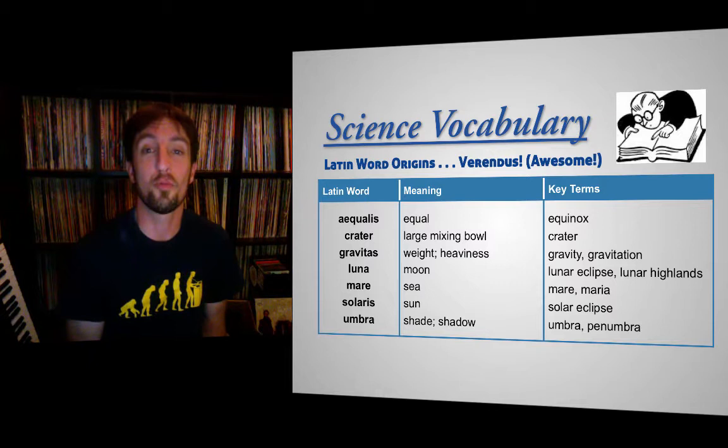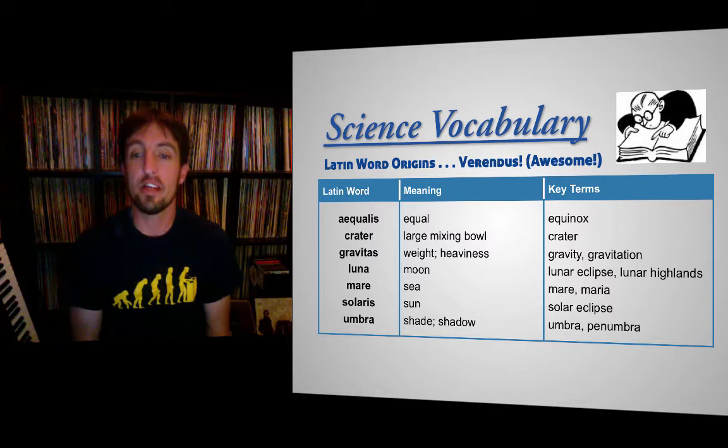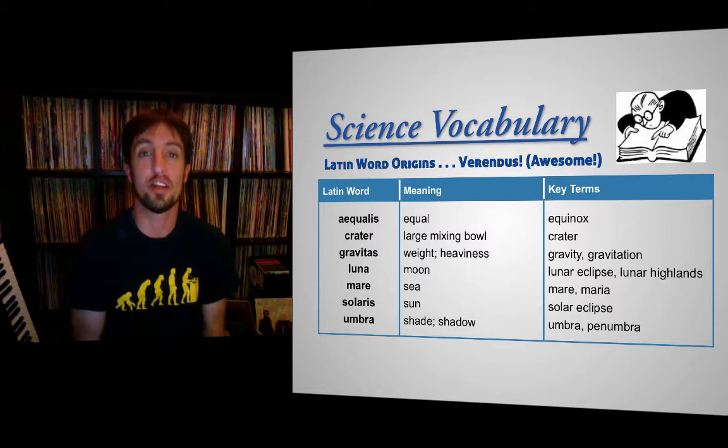Crater is just the same as the crater that we're used to. It comes from the word that means mixing bowl. And if you think of a crater on a moon, it has that sort of bowl shape. Gravitas — we see the word gravity in there. So, anytime we talk about gravity, we're talking about weight or heaviness. Gravity is the force that pulls things down.